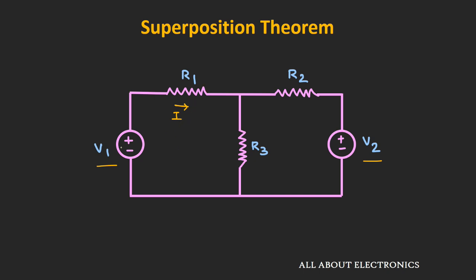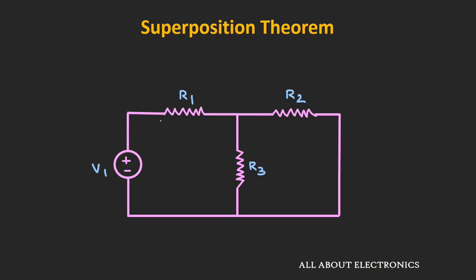Suppose we consider voltage source V1 alone — then we turn off voltage source V2 and replace it by its internal impedance. Since all independent voltage sources are ideal, the ideal voltage source has zero series internal impedance, so we replace V2 by a short circuit. In this case, we can find the current flowing through resistor R1 — let's call it I1.